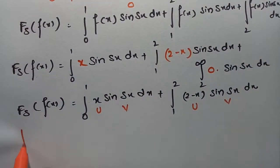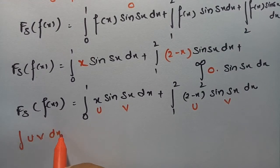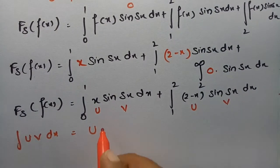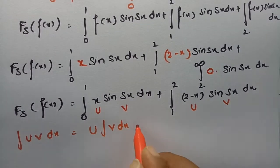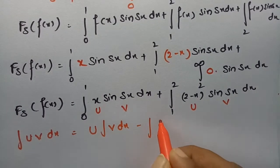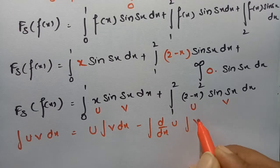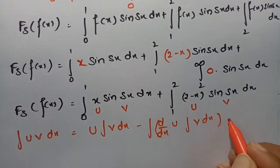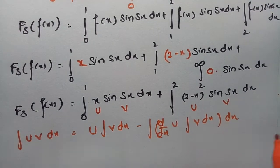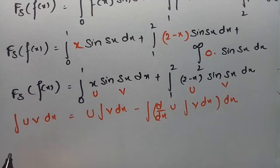The integration by parts formula is: the integral of u·v dx equals u times the integral of v dx, minus the integral of (d/dx of u) times (integral of v dx) dx. Applying this formula will give us the result.